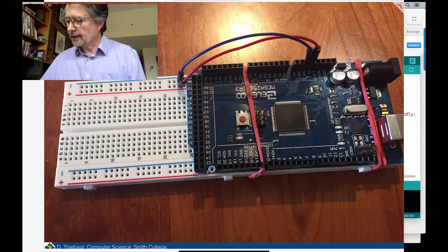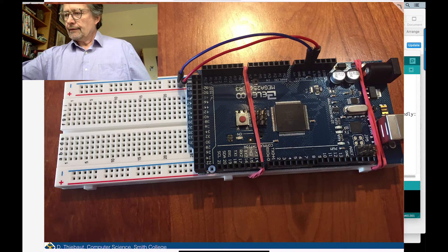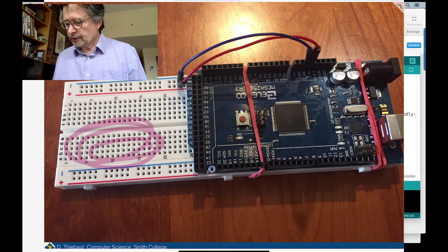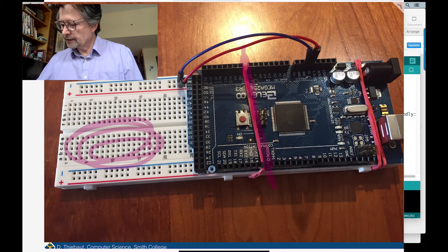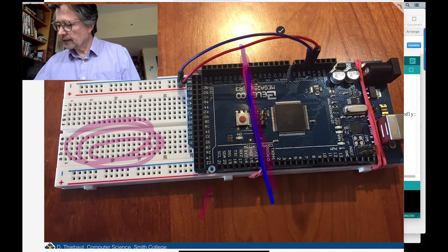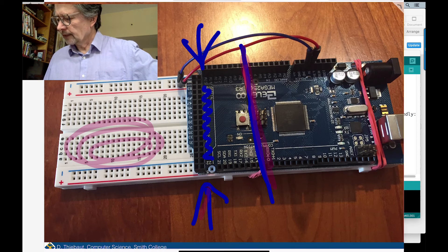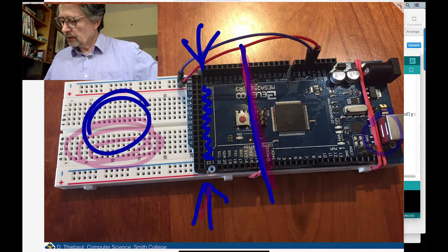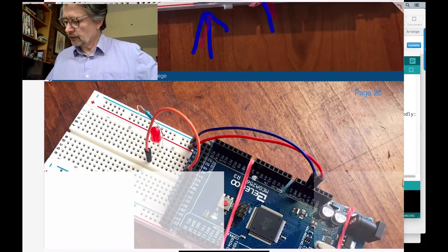Just to show you the setup: you should all have this board — a long breadboard — and what I've done is put the Arduino on top of it and fastened it with rubber bands. I put the rubber band away from the pin numbers so they remain visible. The USB connector is at the end, so you can do your wiring right here with LEDs, switches, resistors, and so on. I have plus 5 and ground wired to the breadboard rails so they're always available.